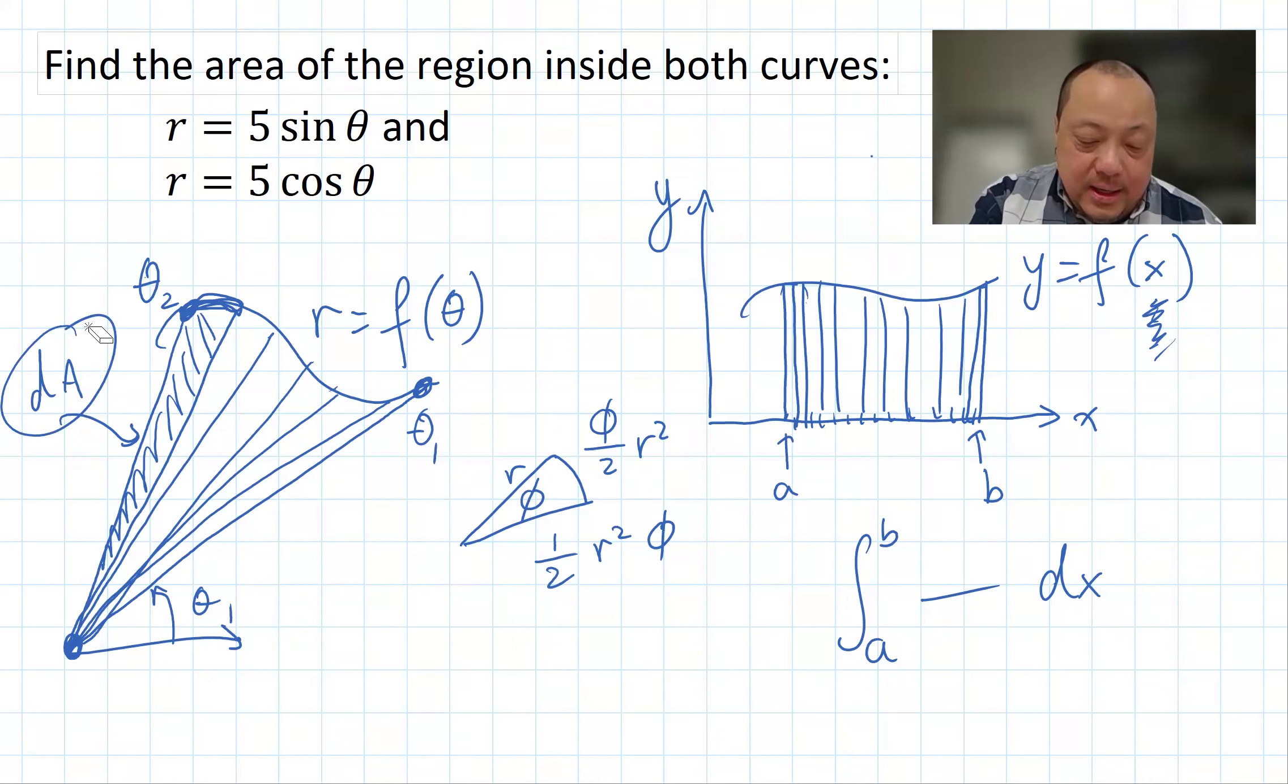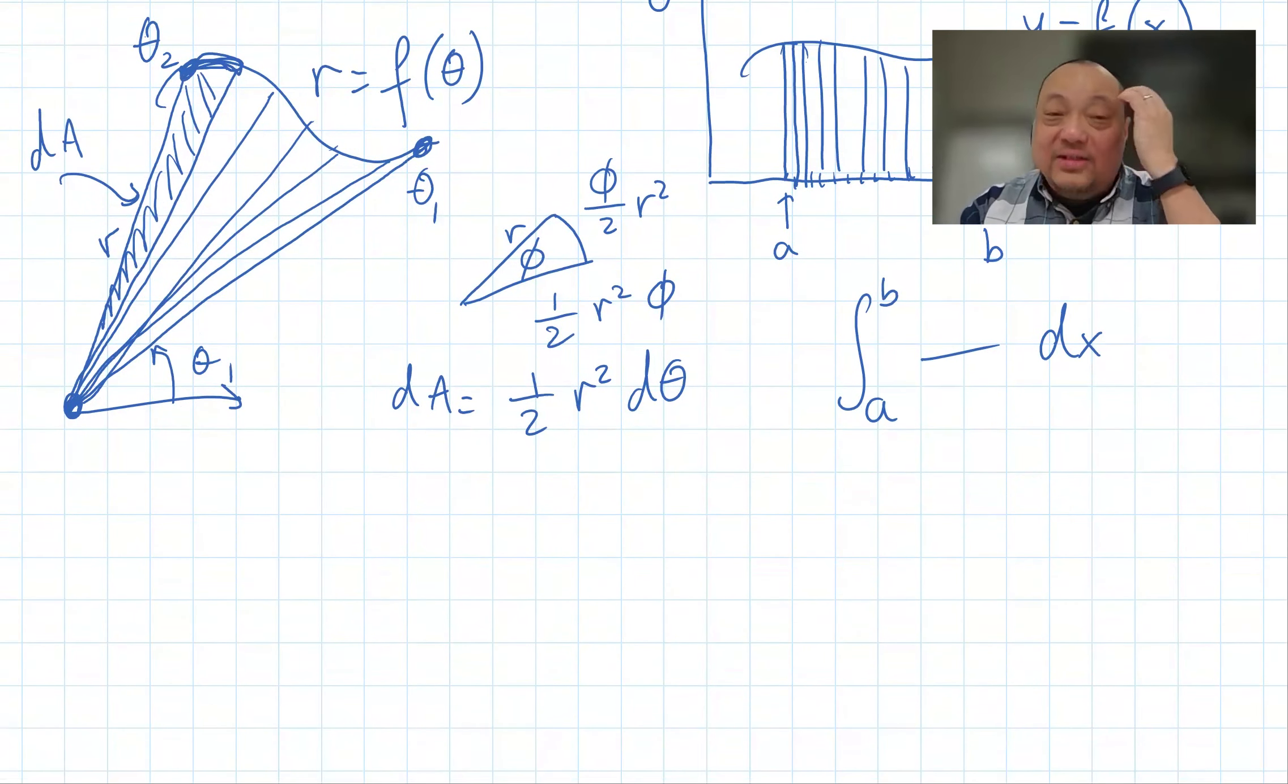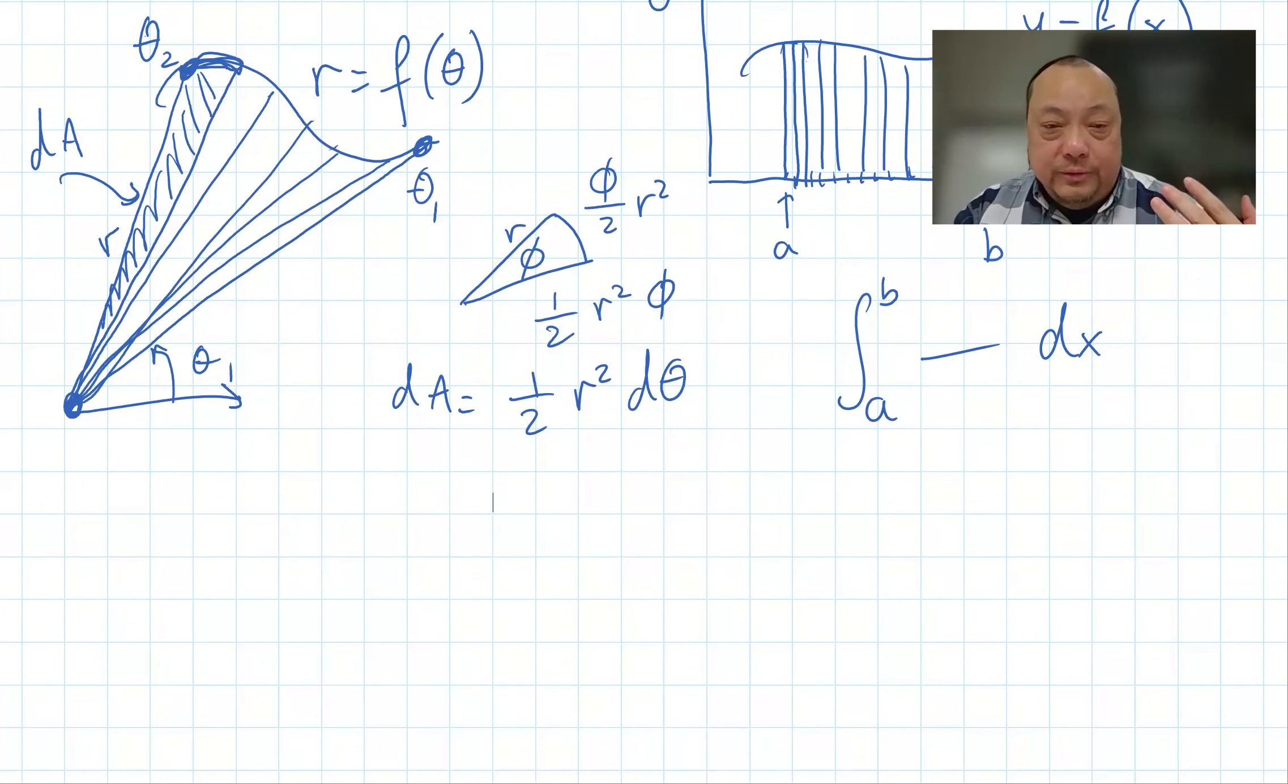The reason why I do that is that now that I look at dA, if I think of this area dA as a tiny little circular sector of radius r like this, then dA is equal to one half r squared times the angle of that tiny little sector, which is d theta. If that is dA, then we can prove that the total area A is integral from theta 1 to theta 2 of one half r squared d theta.